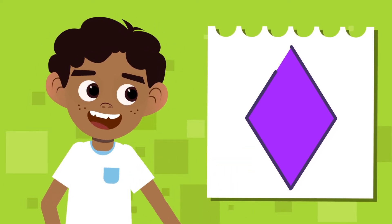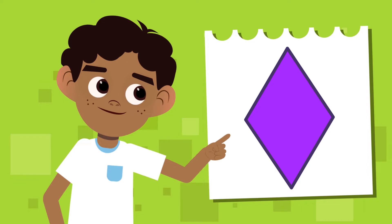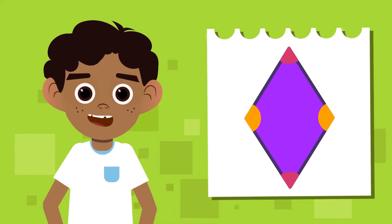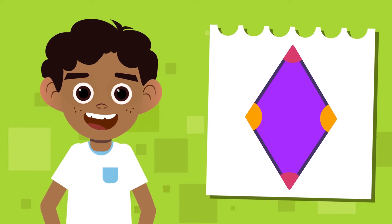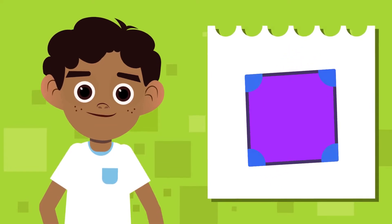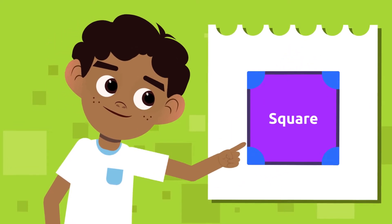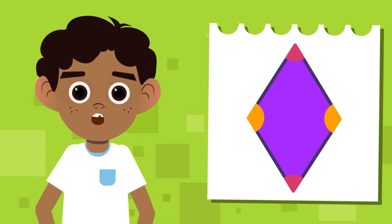Its opposite sides are parallel and its opposite angles are equal, which must be different from each other, meaning that not all angles can be 90 degrees because that would be a square. Its surface area can be measured in square inches, square feet, square miles, and many other units of measurement.